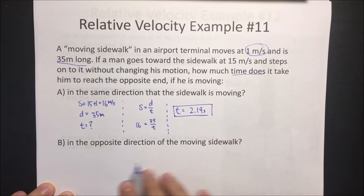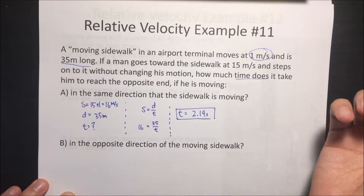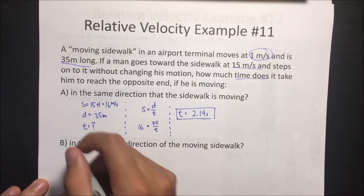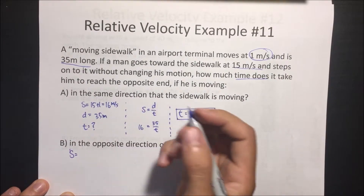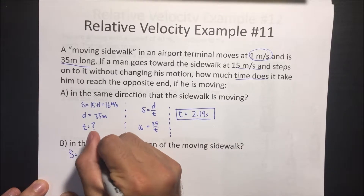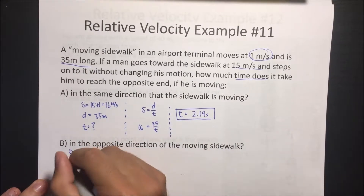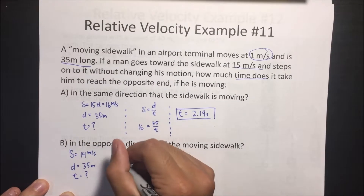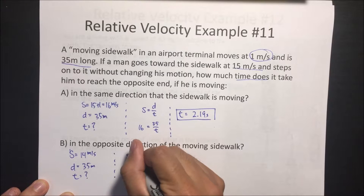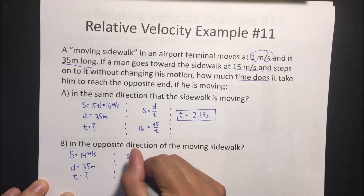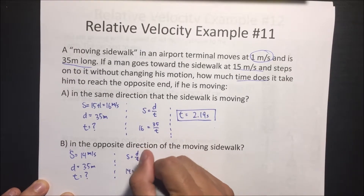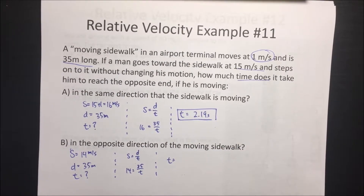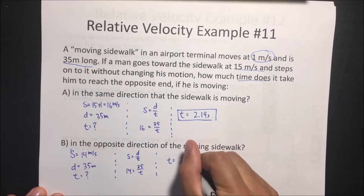Now if he's moving in the opposite direction of the moving sidewalk, he should be going slower. Walking at 15 meters per second but going the opposite direction means we're going to subtract, so it's going to be 4 minus... 15 minus 1, giving 14 meters per second. The distance is still 35 meters. Using speed equals distance over time: 14 equals 35 divided by t, so the time is going to be equal to 2.5 seconds — a bit longer.